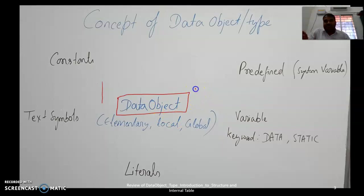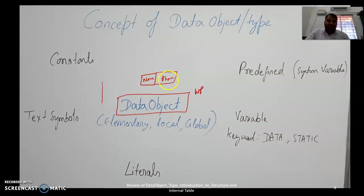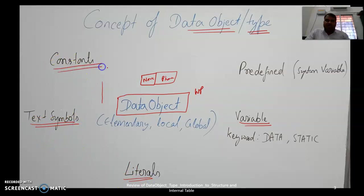Data objects are defined in the work process. We can have different data objects — for example, name and phone number. The type of content defines the data type: name is a character, phone number is a numeric character. Data objects can be defined using variables, literals, text symbols, constants, and predefined variables.